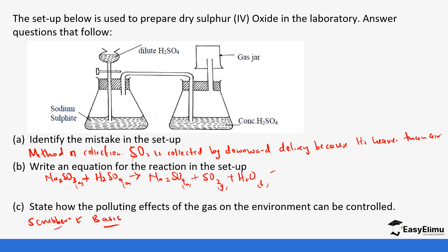This brings us to the end of this lesson. In the next lesson we are going to be looking at sulfur dioxide and some of its chemical properties. Sulfur dioxide has many and varied chemical properties because of its nature, so see you in the next lesson.